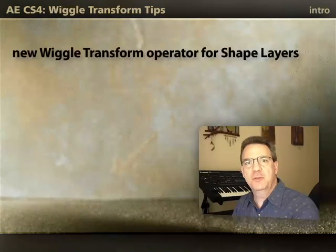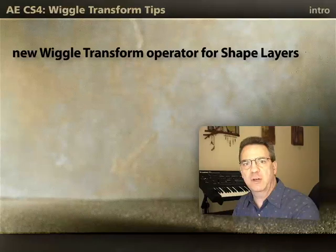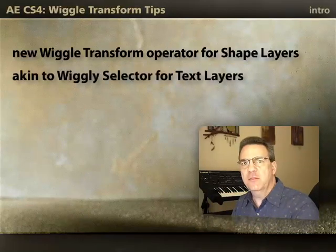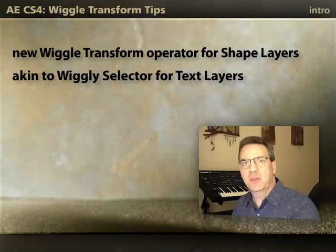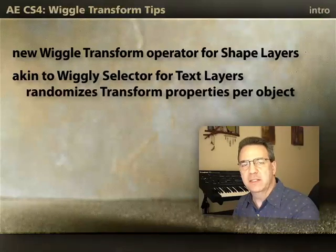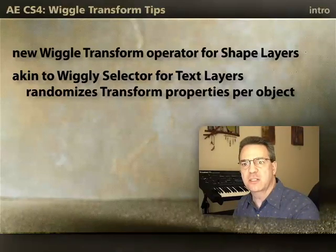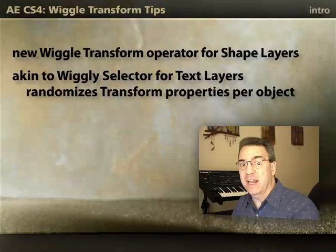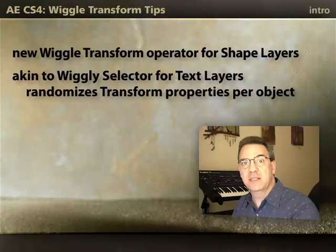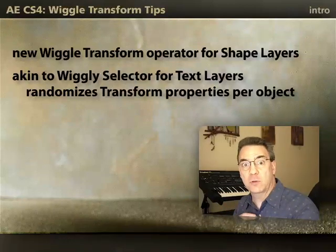Hi, I'm Chris Meyer, and I'd like to share with you some tips for how to use the new Shape Layers Wiggle Transform Operator that was added in After Effects CS4. Now, if you're already familiar with the Wiggly Selector for text layers, it's a very similar concept. It allows you to randomize various transform properties — scale, position, rotation, and such — for shape paths in a shape layer, just like the Wiggly Selector randomizes individual characters inside a text object. So let's go see how it works.